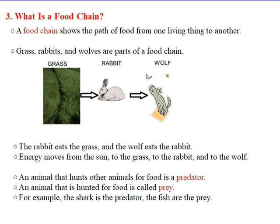Food energy flows from one organism to another. Arrows in a food chain are used to show the feeding relationship between animals. The arrow points from the organism being eaten to the organism that eats it. So energy moves from the sun to the grass, then to the rabbit, and finally to the wolf.